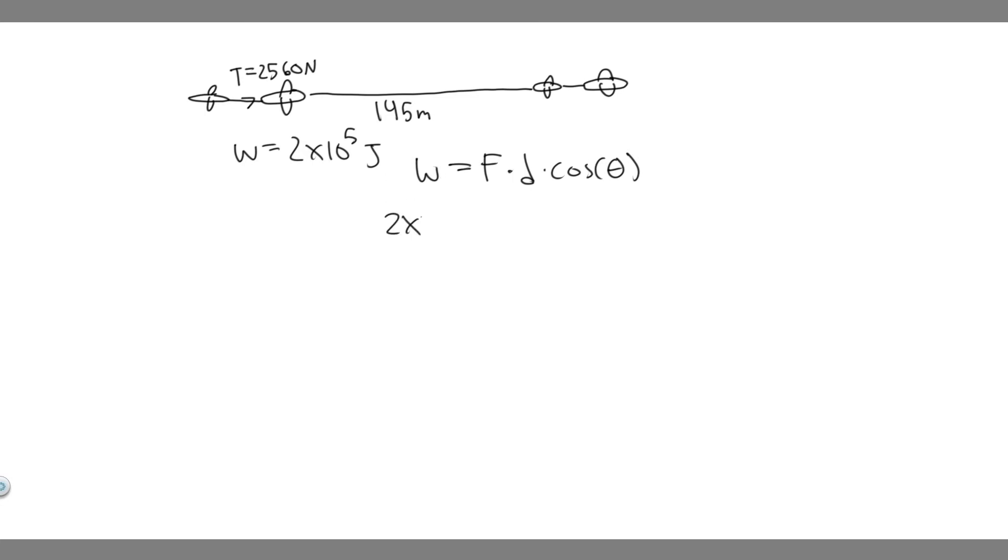The work is 2 times 10 to the 5, which equals the force, so the force is the tension which is 2,560, times the distance traveled, which is 145, times the cosine of theta. If we want to solve, divide by these two numbers. That's going to cancel there, and you're going to get 2,560 times 145 over here. So cosine of theta equals 2 times 10 to the 5 divided by 2,560 times 145.